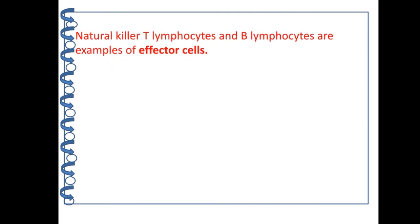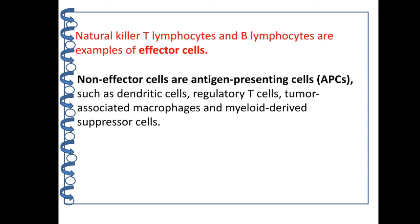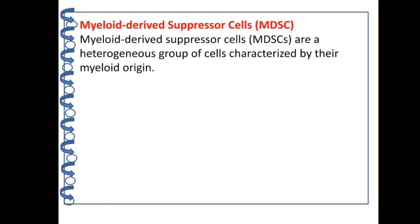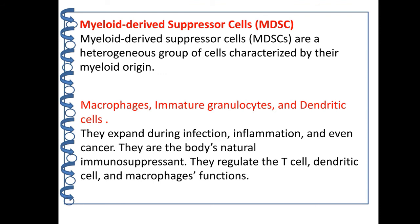Natural killer T lymphocytes are examples of effector cells. Other known effector cells are antigen presenting cells such as dendritic cells, regulatory T cells, tumor-associated macrophages, and myeloid-derived suppressor cells. Myeloid-derived suppressor cells are a heterogeneous group of cells characterized by their myeloid origin; macrophages, immature granulocytes, and dendritic cells are examples. They grow during infection, inflammation, and even cancer. They are the body's natural immunosuppressants, regulating T cell, dendritic cell, and macrophage functions.